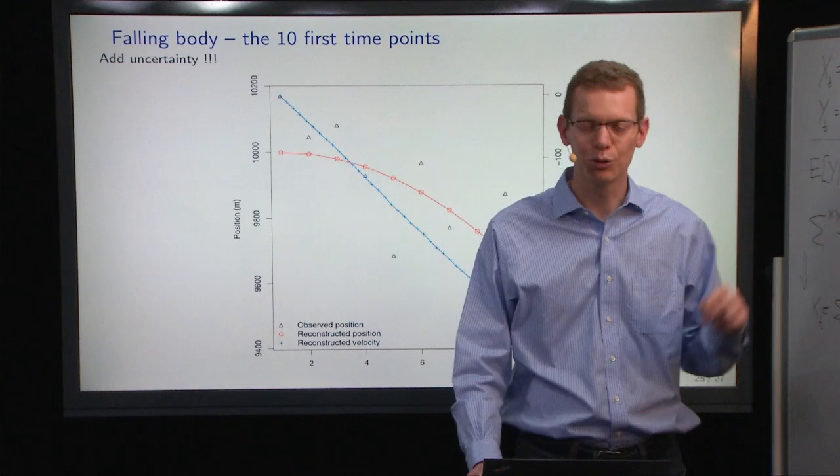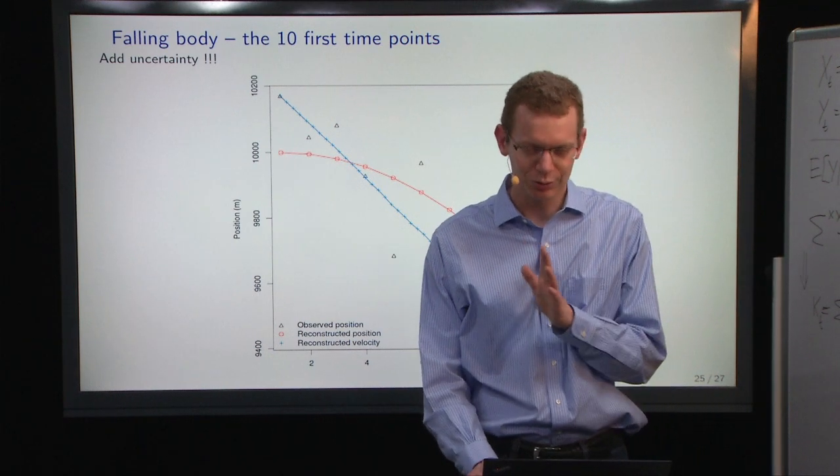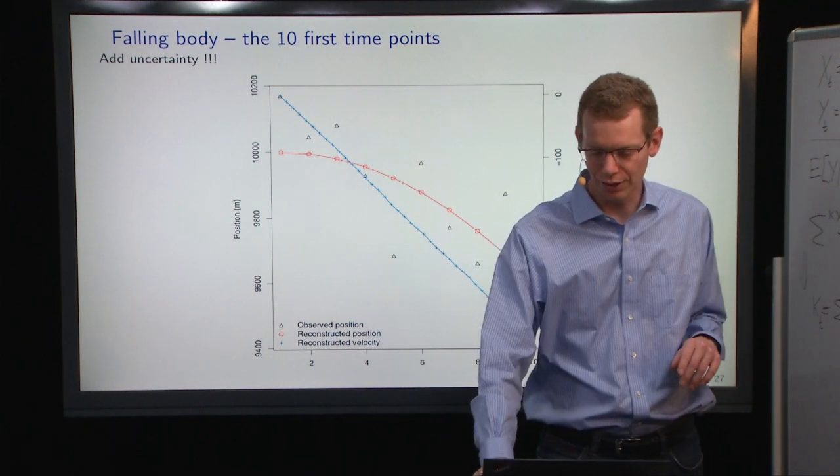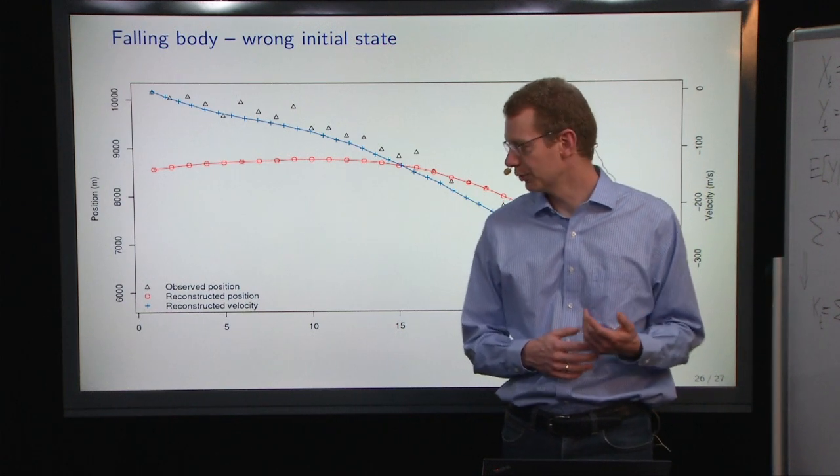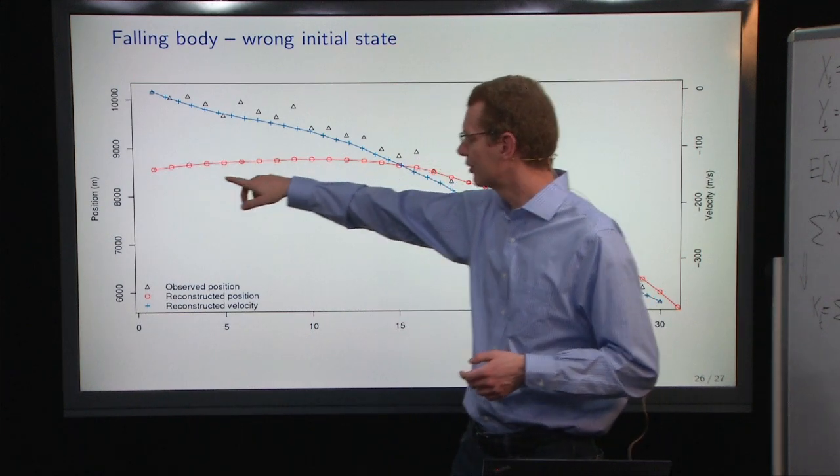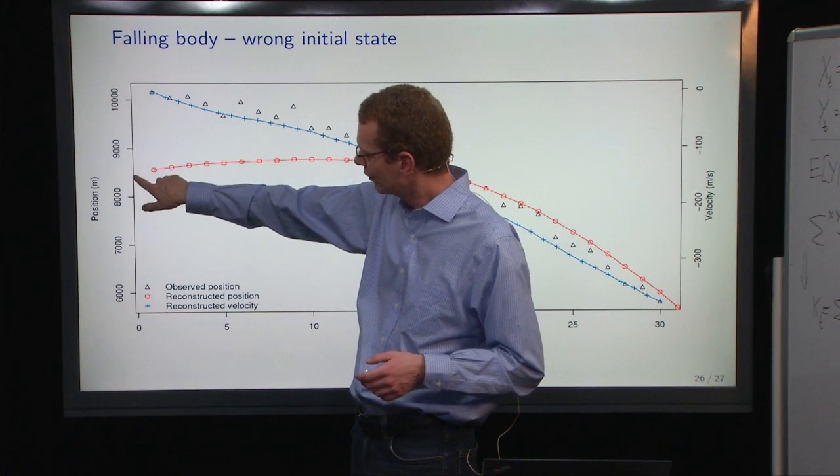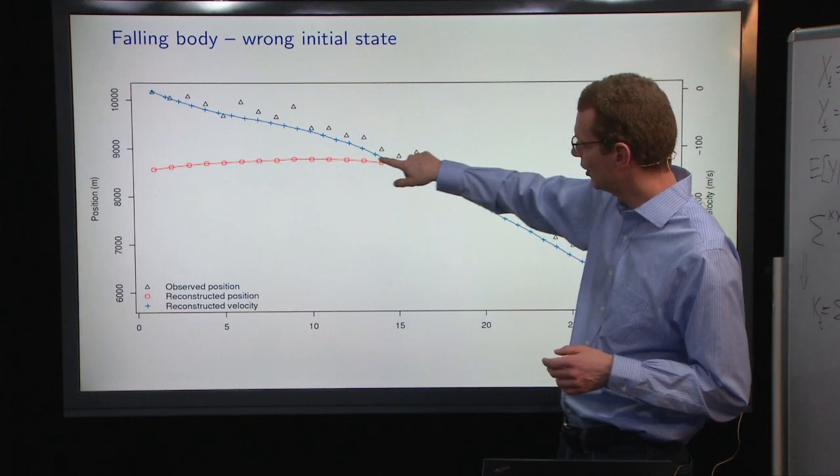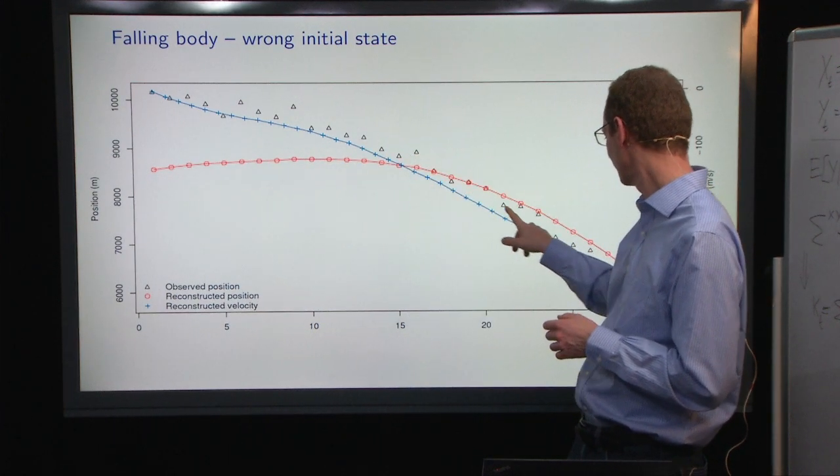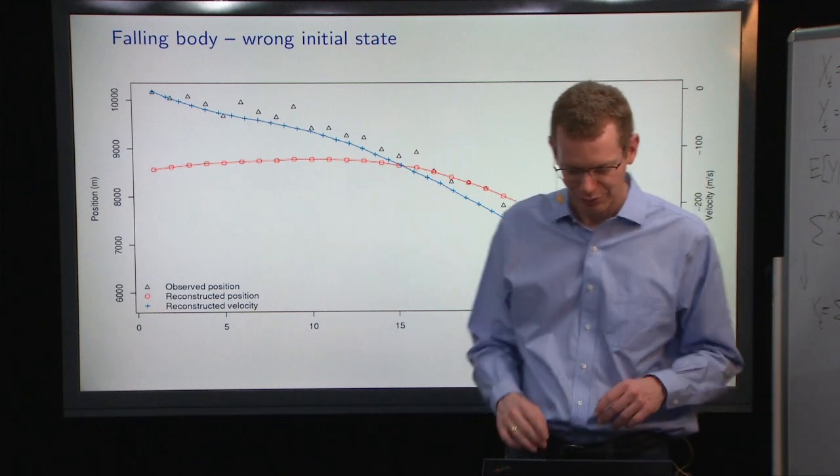I forgot, in quotes, to add the uncertainty just to save that bit for later. Just to show you what happens if you start at the wrong place. If you start at 8,500 meters, the estimate will slowly fly upwards until you get close to the true value, and then zoom into that.